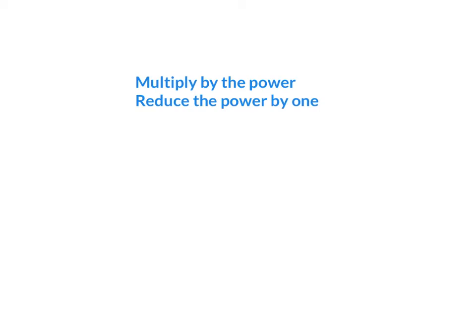So the very basic rules are this. We multiply by the power and reduce the power by 1.